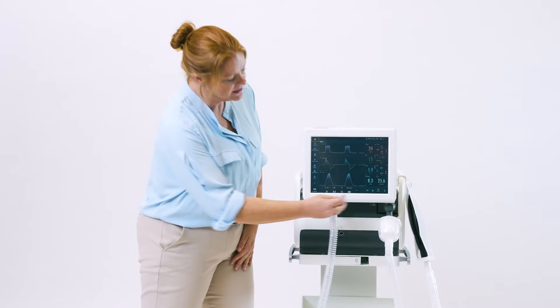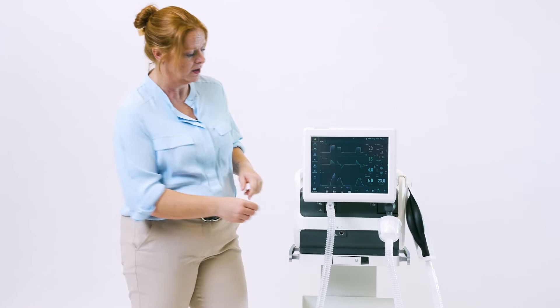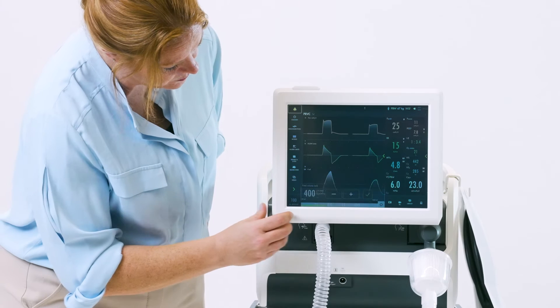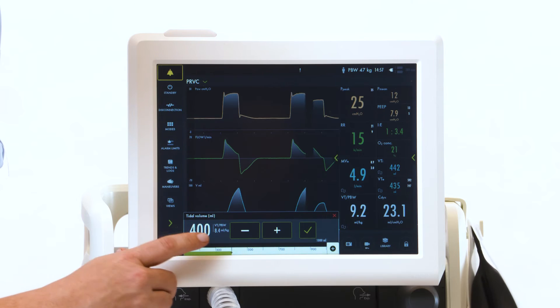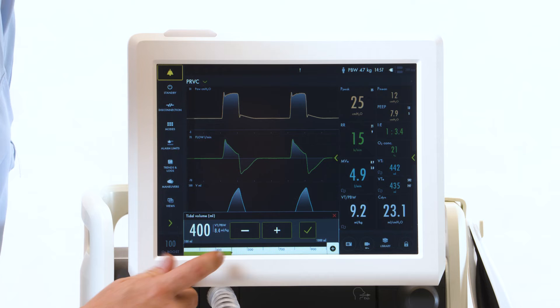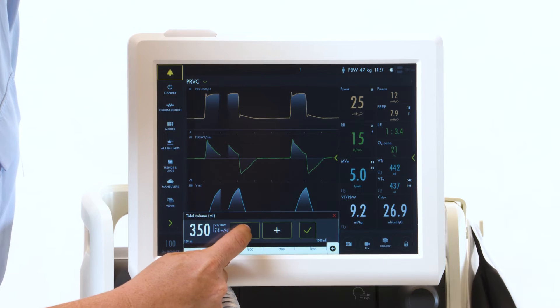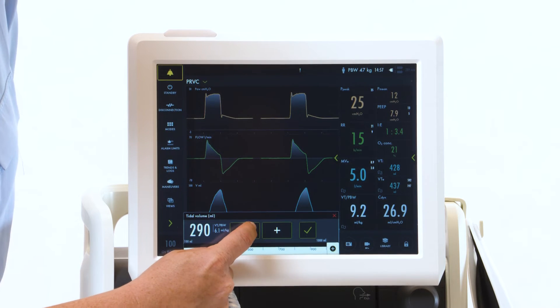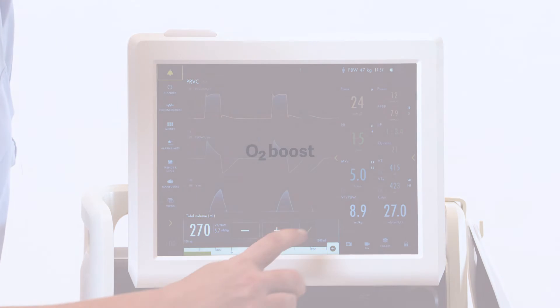Because we put in the patient information at the beginning, the vent will now look at mils per kilo of predicted body weight, breath by breath. This is indicated down here. When adjusting the volume, you'll notice your set volume, followed by mils per kilo. If you'd like to adjust for a lung protective strategy, you may do this here, and then hit your check mark to confirm.